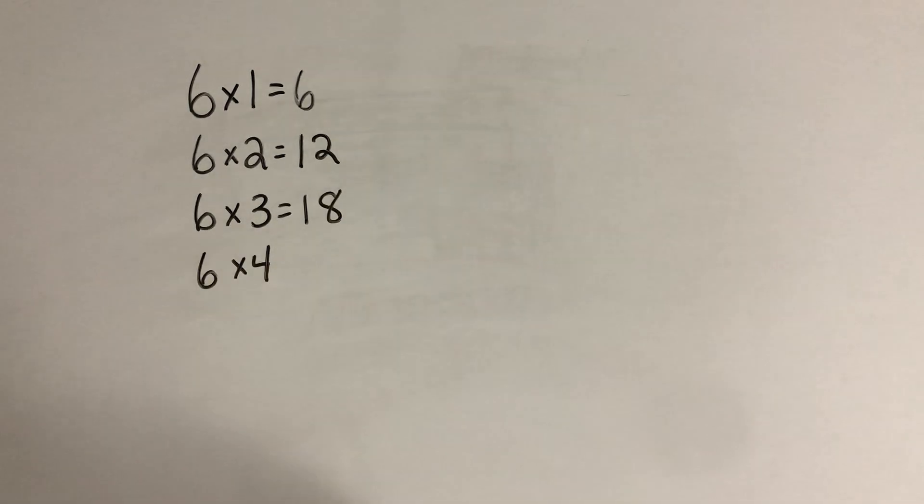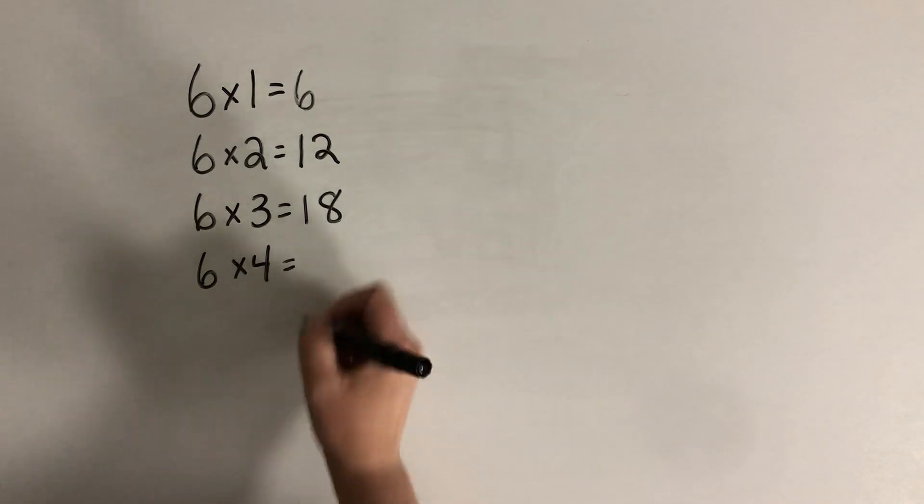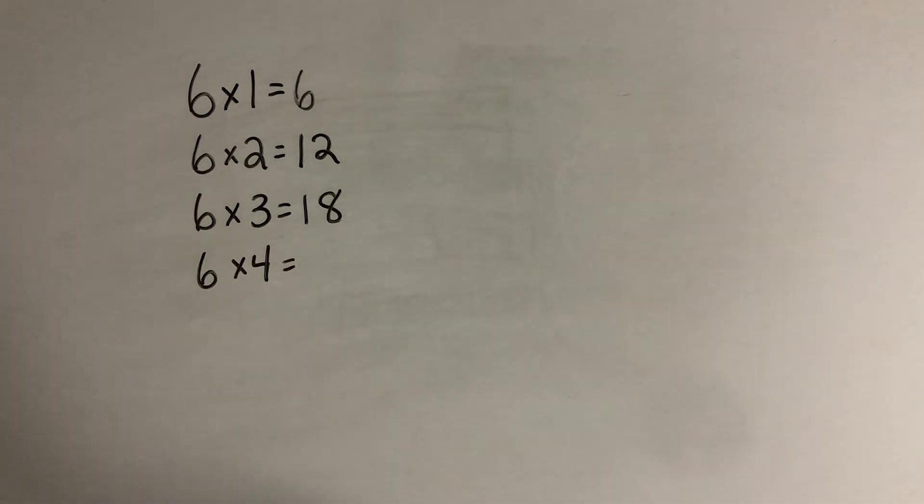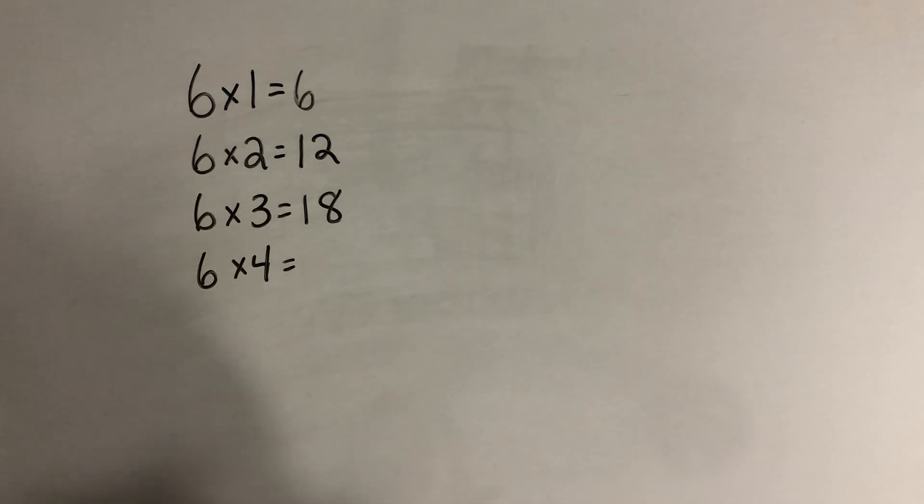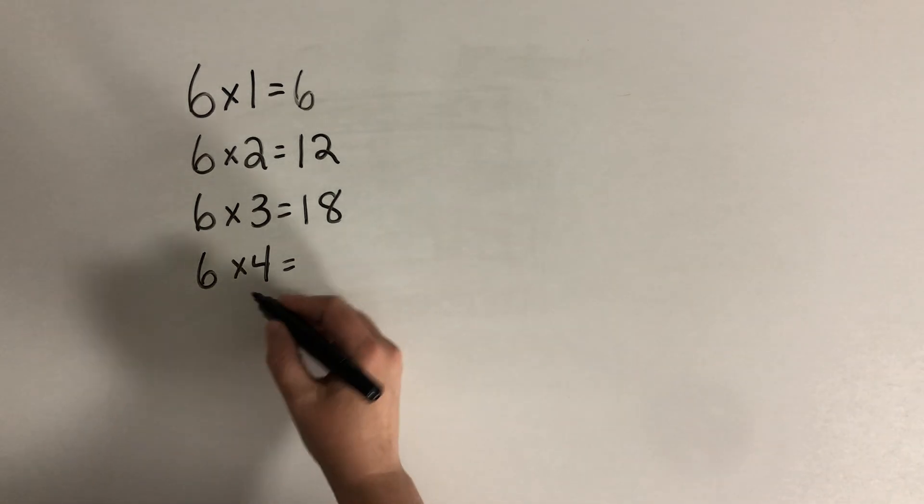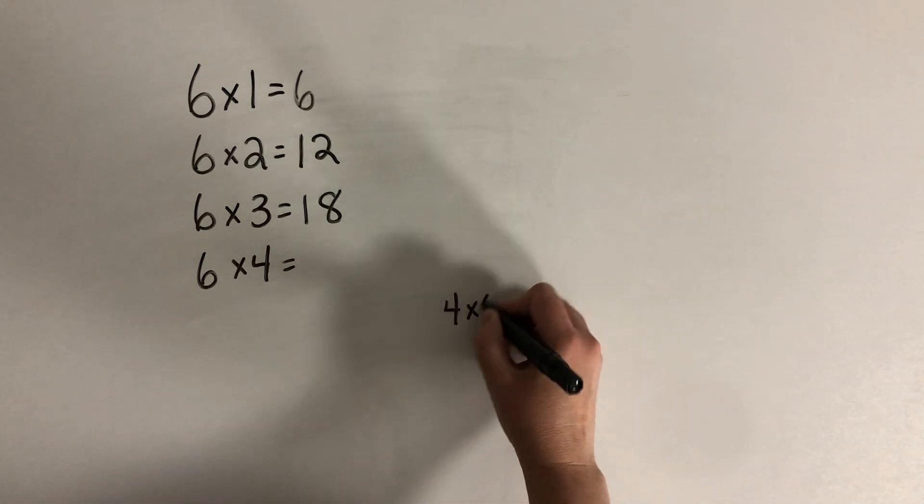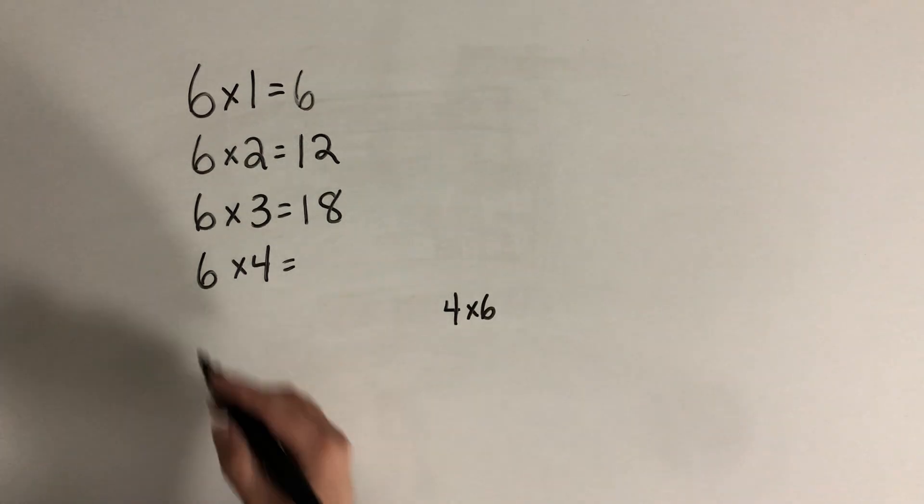6 times 4. Now, do you remember what we learned for a strategy when we multiply by 4? Well, in that one, we can double the double. So if you didn't learn that yet, make sure you go back and watch the video for the 4s. But what we're doing, I'm going to think about this like 4 times 6, because we know the product will be the same, won't it?